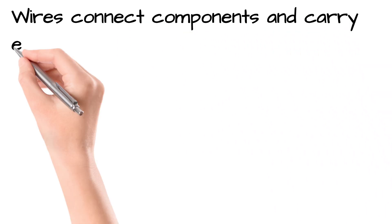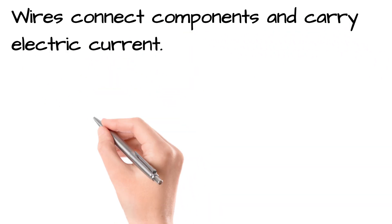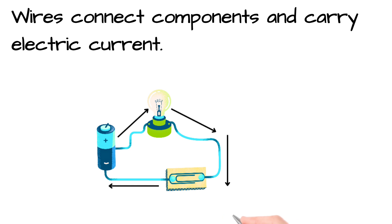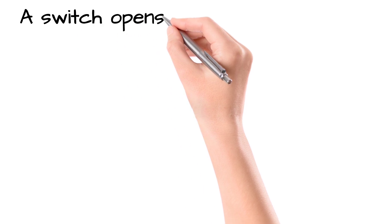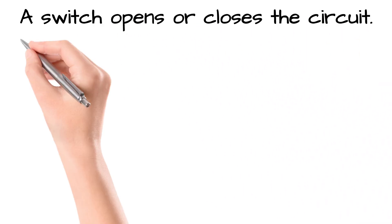Conducting wires are like the roads for electricity. They link the battery, switch, and components, carrying the current safely from one part of the circuit to another. The switch is like a gate that controls the flow of electricity.